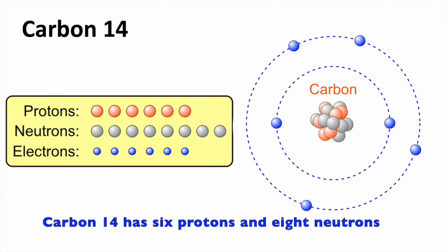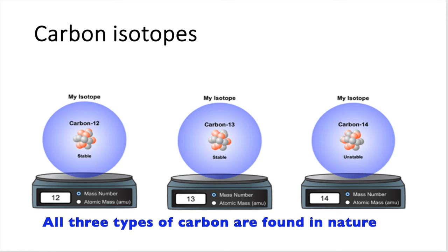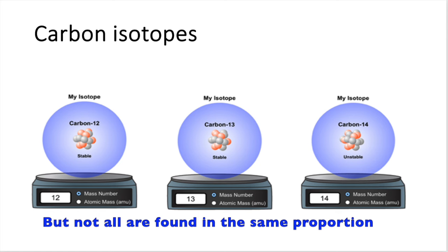Carbon-14 has six protons and eight neutrons—two more neutrons than protons. All three types of carbon are found in nature, but not all are found in the same proportion.